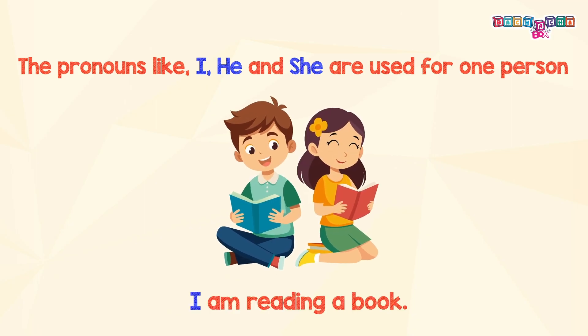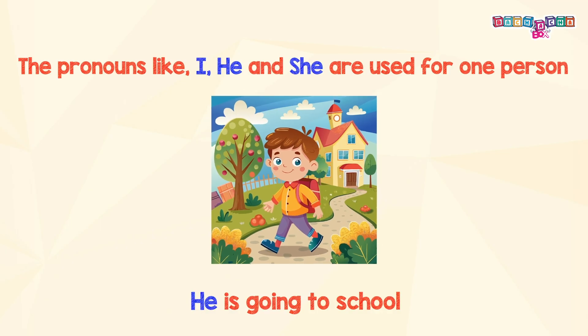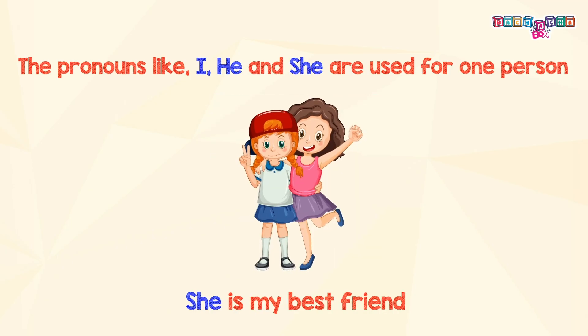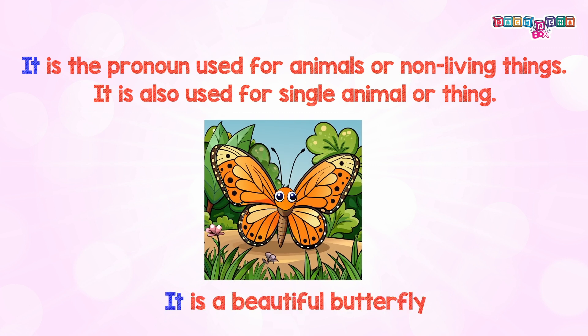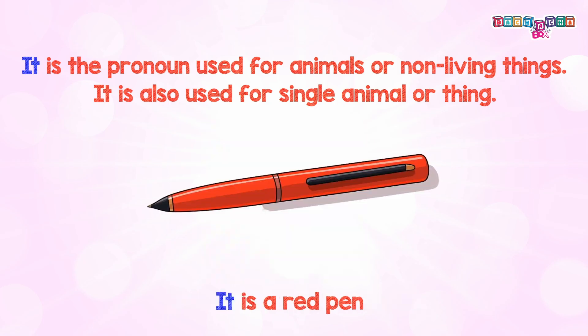For example: I am reading a book. He is going to school. She is my best friend. 'It' is the pronoun used for animals or non-living things. It is also used for a single animal or thing. For example: It is a beautiful butterfly. It is a red pen.